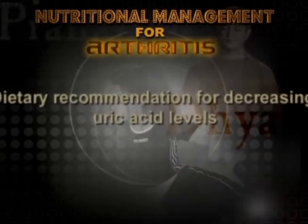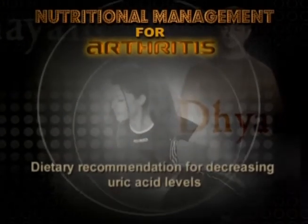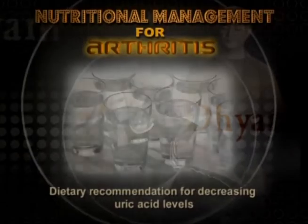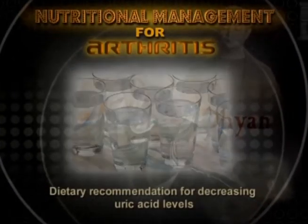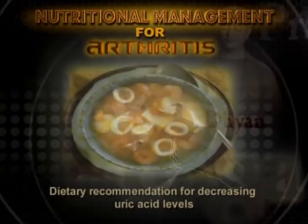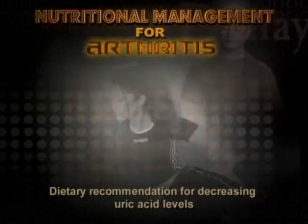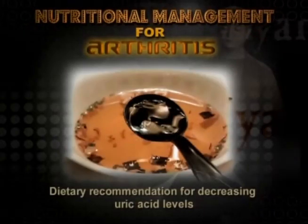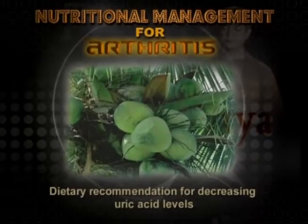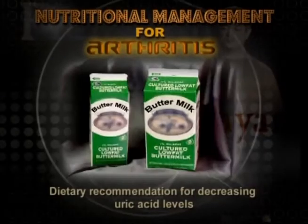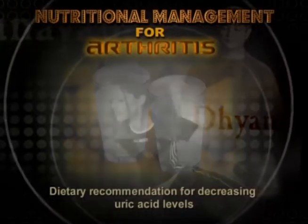Dietary Recommendations for Decreasing Uric Acid Levels: Drink at least 8–10 glasses of water throughout the day. Increase the fluid content of your diet by incorporating soups, coconut water, thin buttermilk, and lime water in your diet.